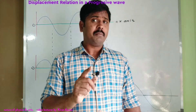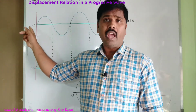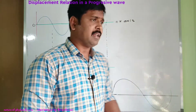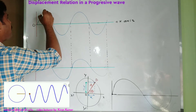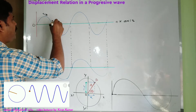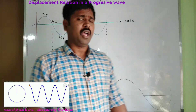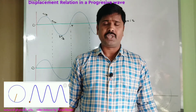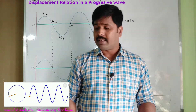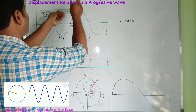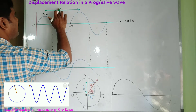Considering a simple harmonic plane wave travelling from the origin O along the positive x-axis. Taking O as the zero time reference, from the origin this time is t/4, this is t/2, this is 3t/4, and this is t. The time taken to complete one wave is called the time period. The distance between two successive particles of the medium is called the wavelength, indicated by the letter lambda.